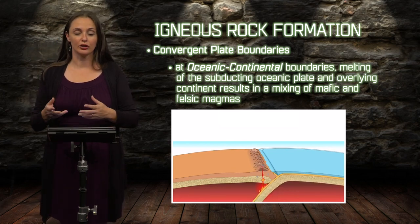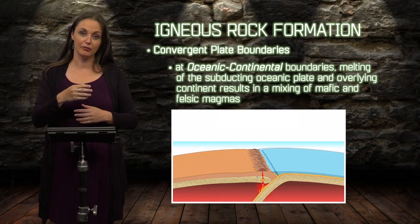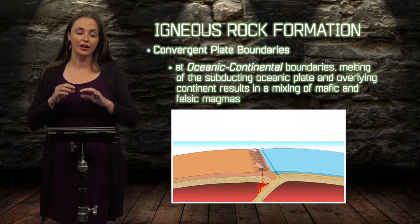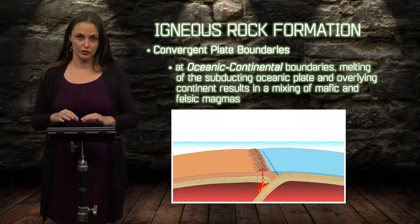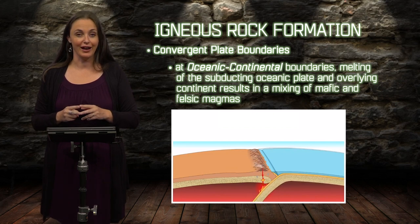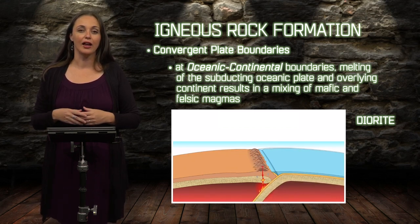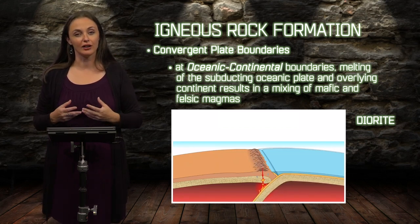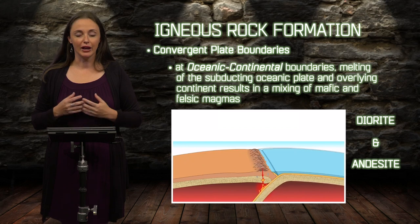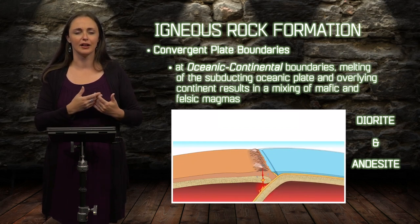At oceanic-continental convergence you have a mixing of two different kinds of magma: the mafic oceanic crust melting and assimilating into felsic igneous rock. When the two come together, they make something with an intermediate composition, which we call an intermediate igneous rock. Intermediate igneous rocks can be intrusive or extrusive based on where they cool. Given a slightly more felsic composition, it's going to be harder for this magma to move all the way to the surface — a lot of it will cool and crystallize underneath the surface, meaning it cools intrusively. Intrusive intermediate igneous rock is called diorite, while extrusive intermediate igneous rock forms andesitic volcanoes — the rock being andesite. These eruptions are going to be a lot more explosive than the island arc volcanoes in places like Indonesia.